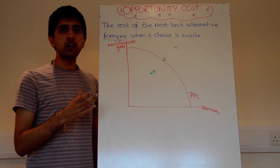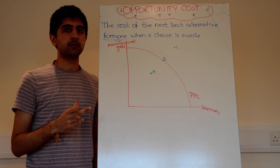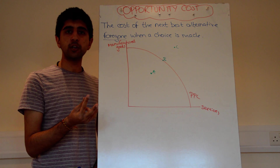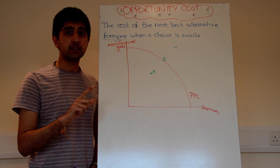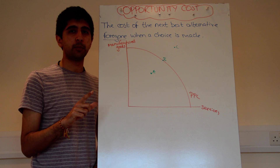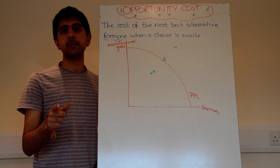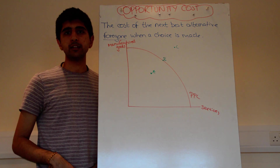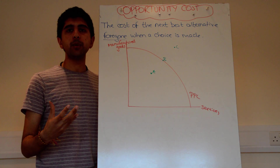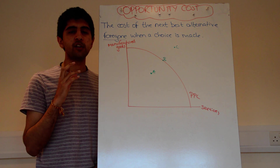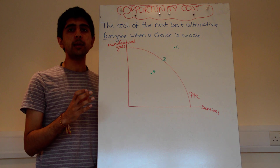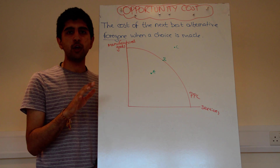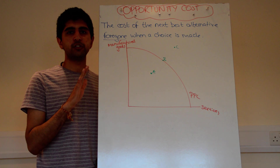When we consider opportunity cost, we're only looking at economic goods. In an economy there are two types of goods: economic goods and free goods. Free goods have no opportunity cost at all because they are in unlimited supply — goods like sunlight, sea water, the air we breathe. They're in unlimited supply, therefore we're not concerned about how to allocate them.